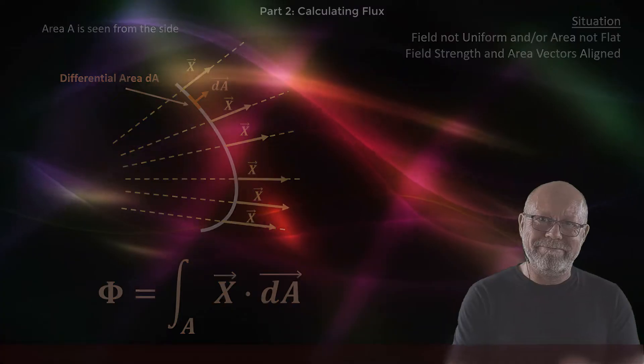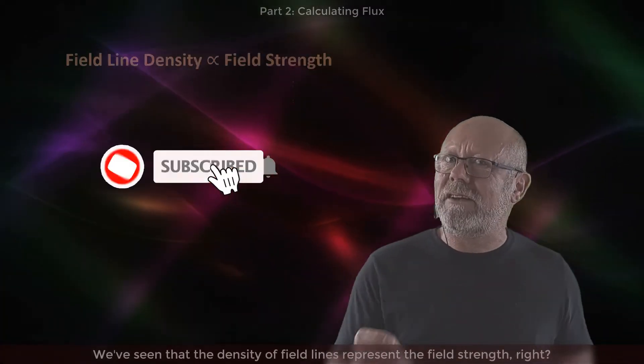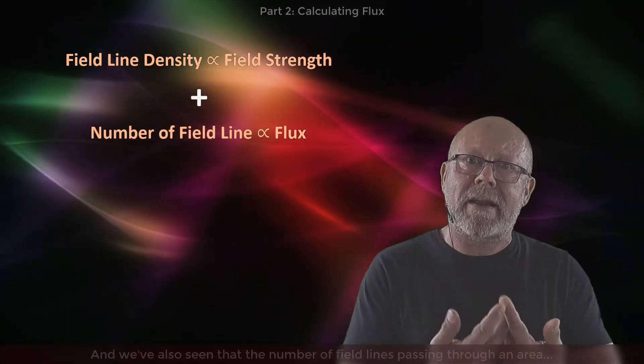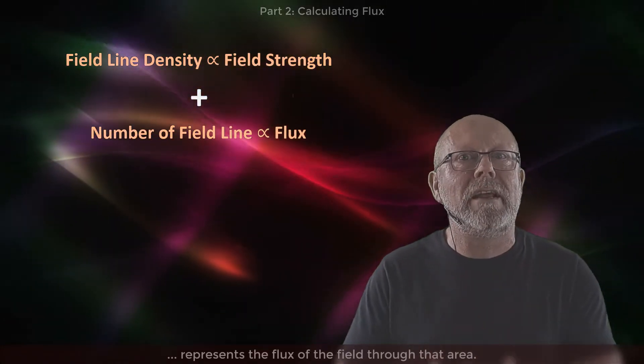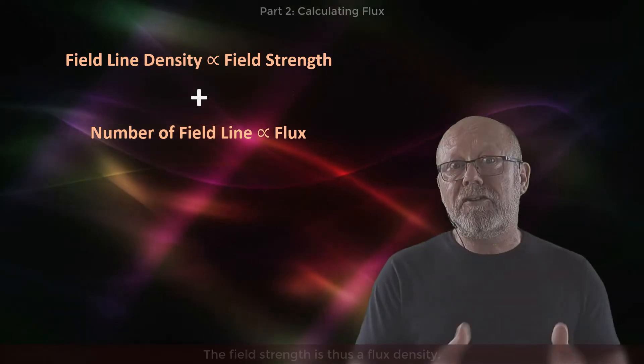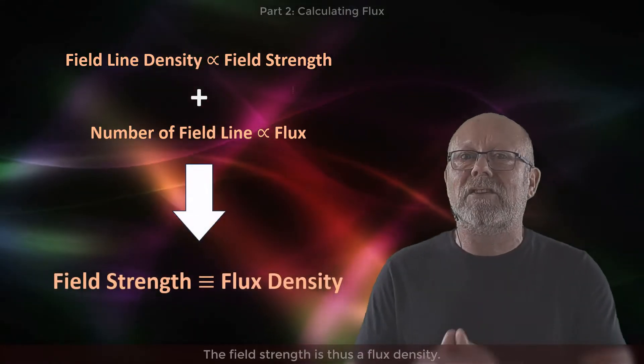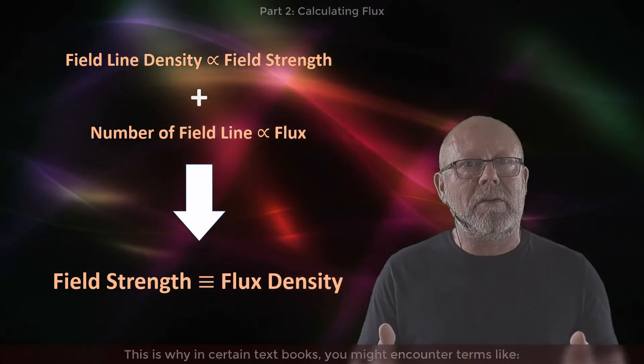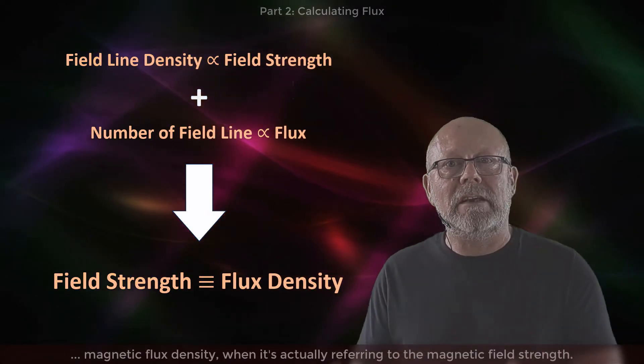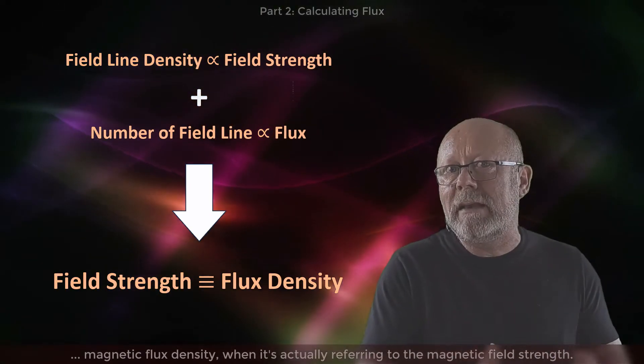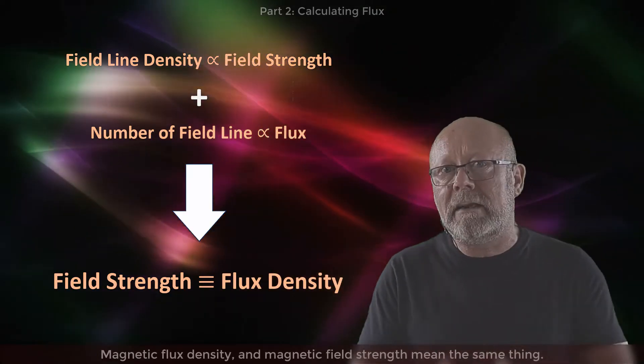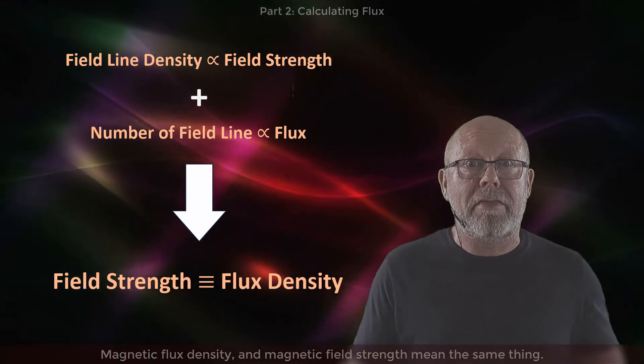Oh, and a final thought. We've seen that the density of field lines represent the field strength, right? And we've also seen that the number of field lines passing through an area represents the flux of the field through that area. The field strength is thus a flux density. This is why in certain textbooks you might encounter terms like magnetic flux density when it's actually referring to the magnetic field strength. Magnetic flux density and magnetic field strength mean the same thing.